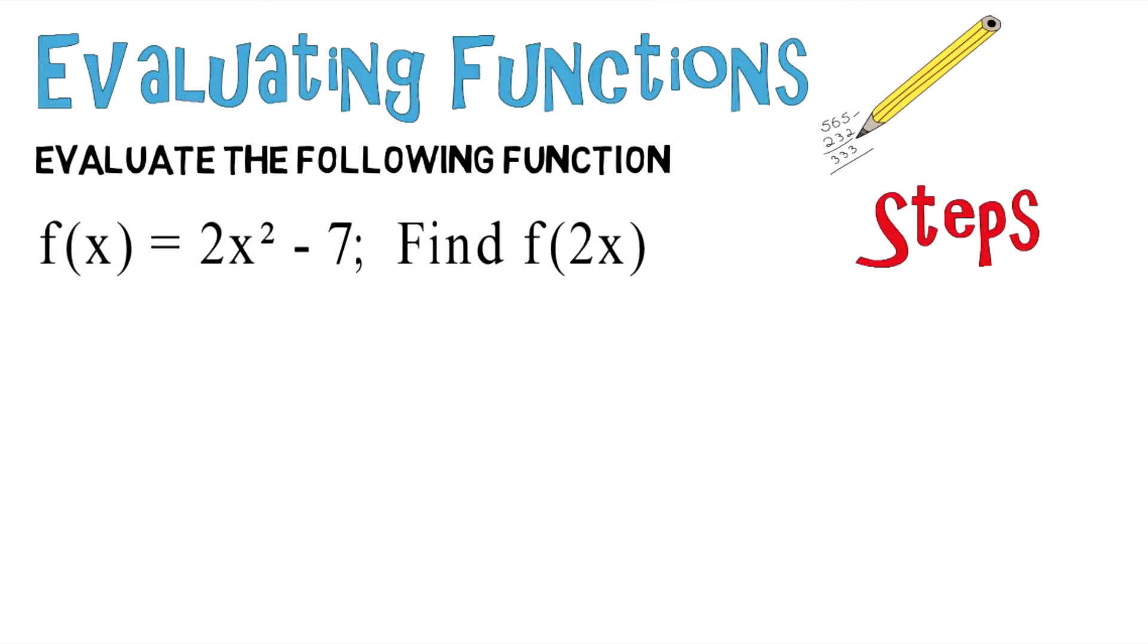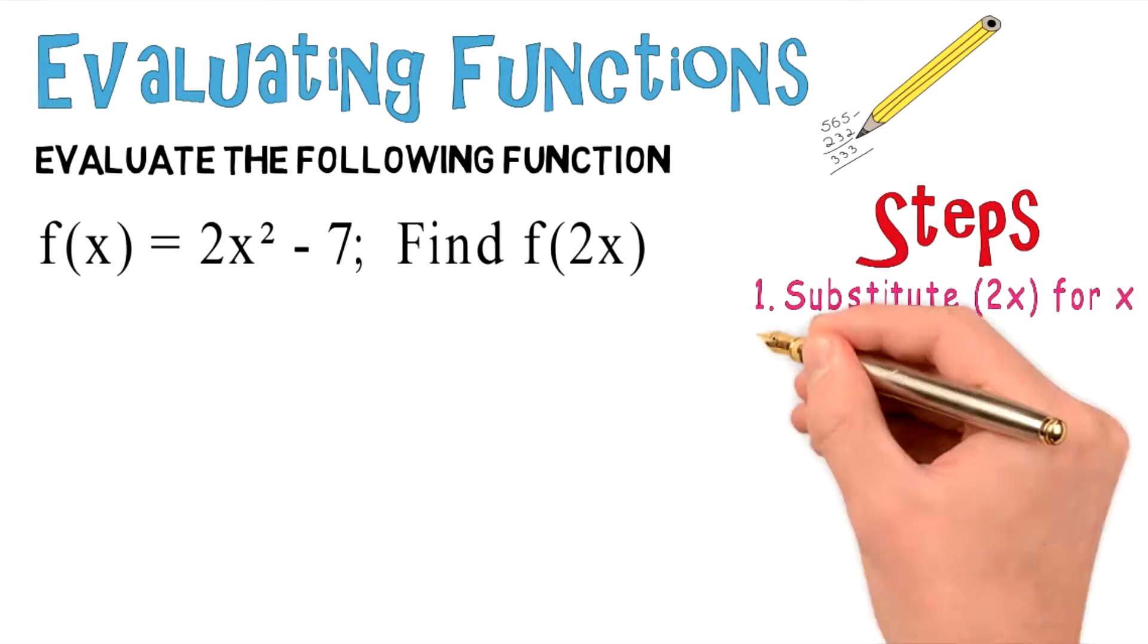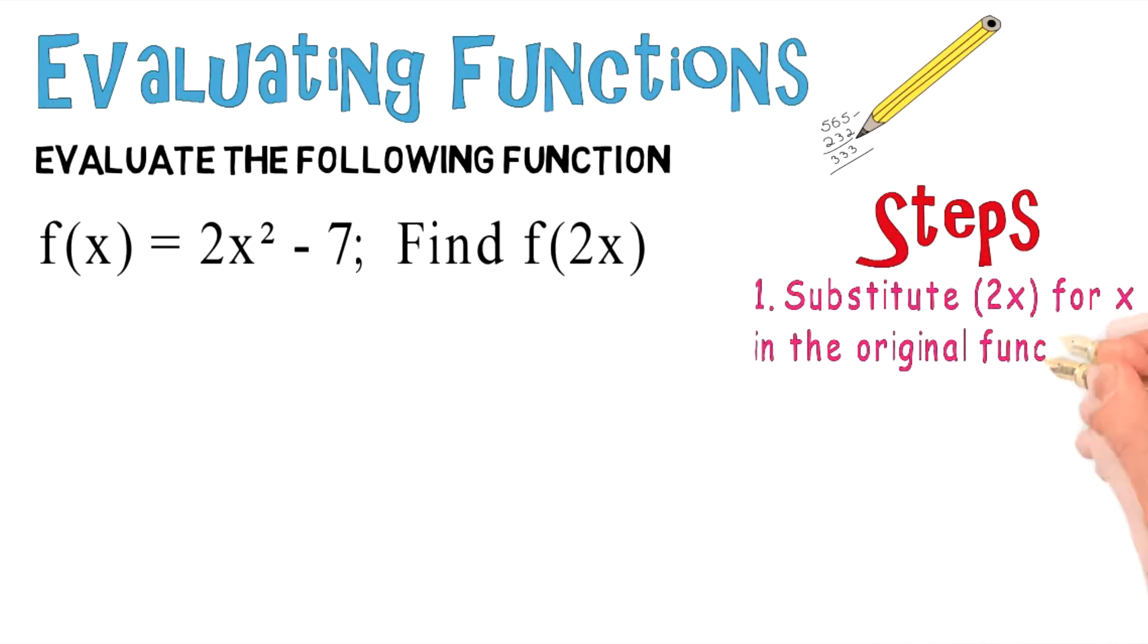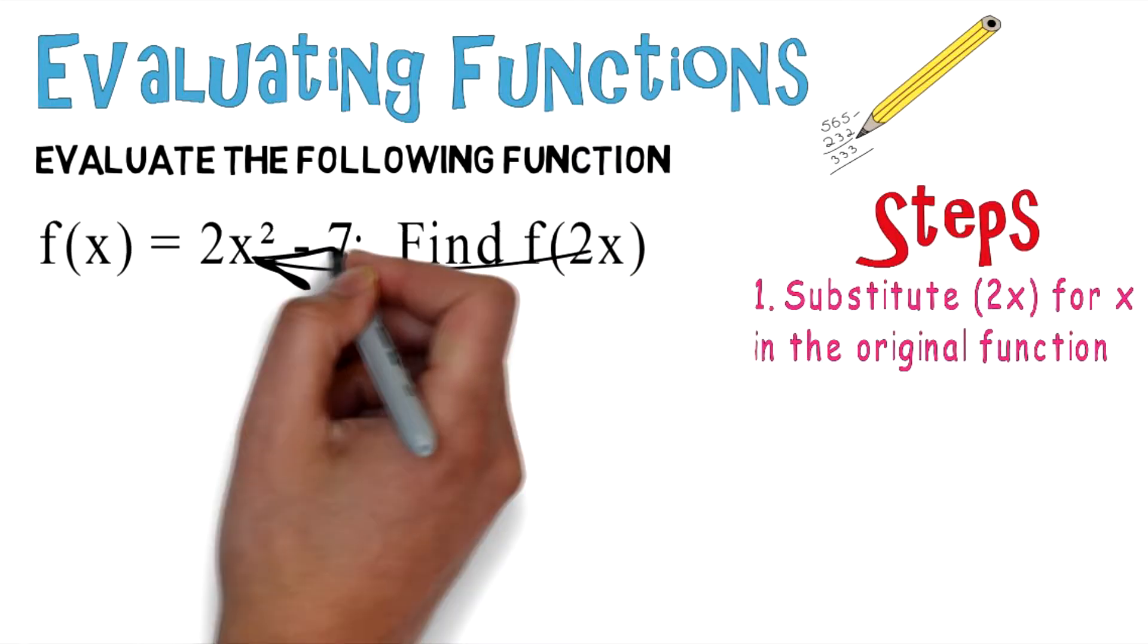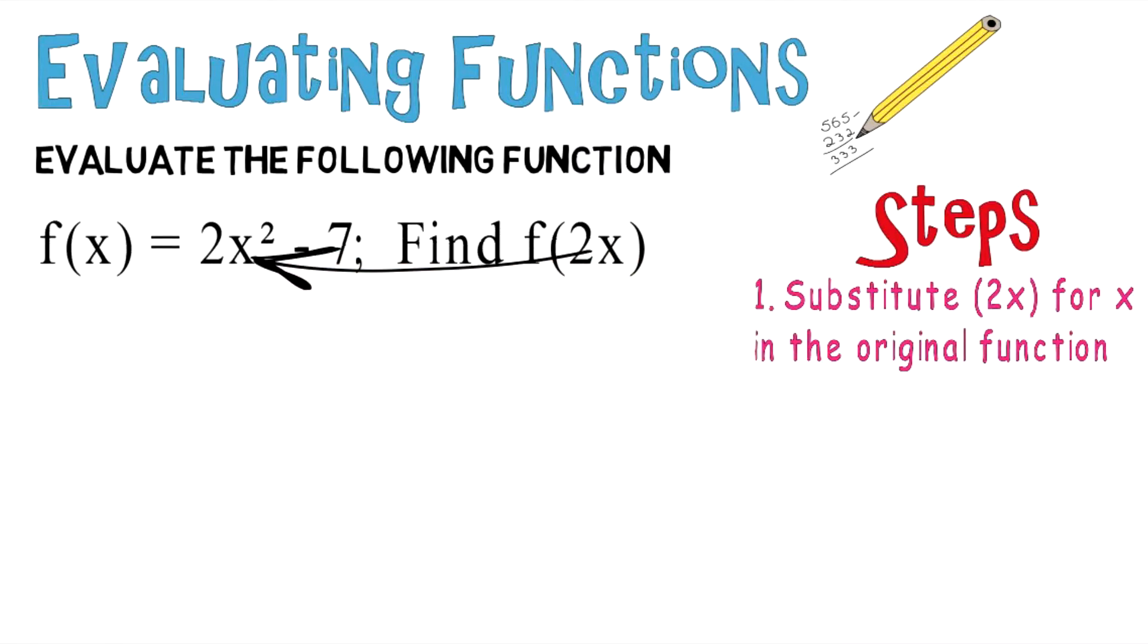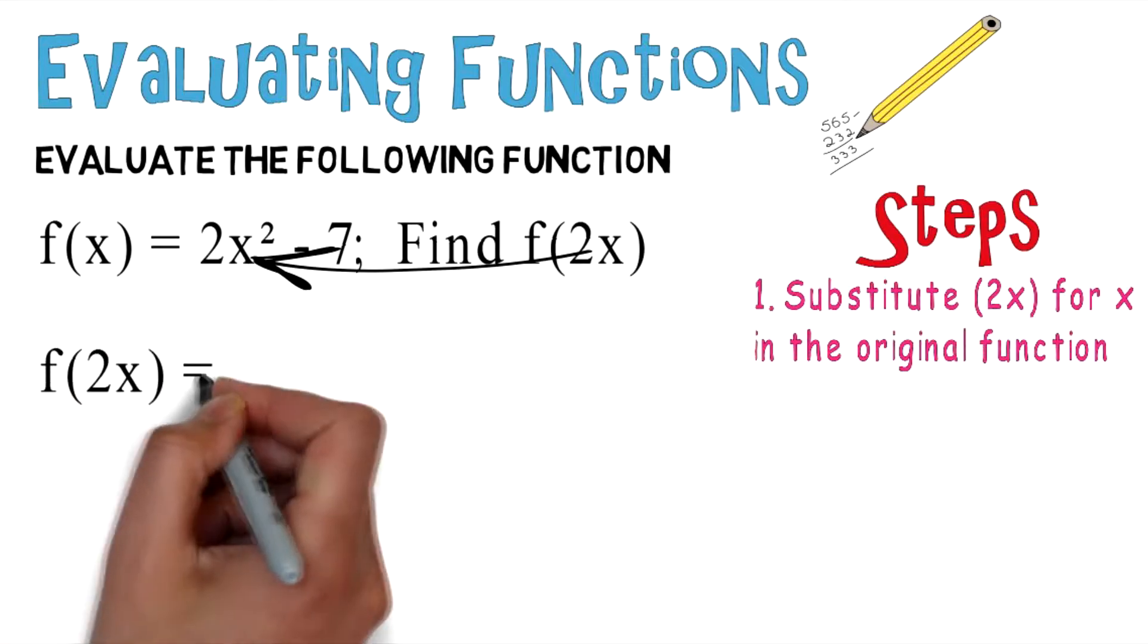The first step is to substitute 2x for x in the original function. So you take that 2x and you plug it into the x in the function, so now f of x is written as f of 2x.